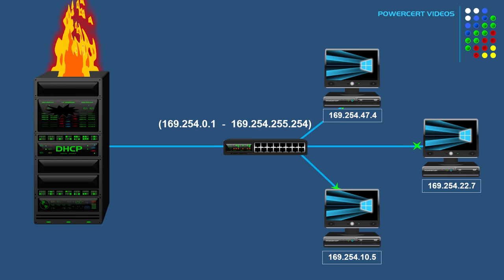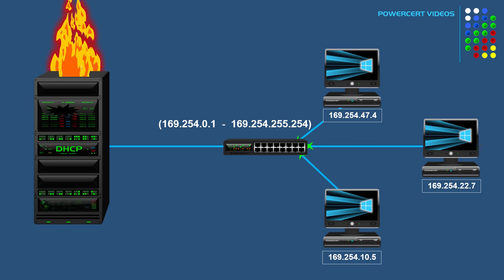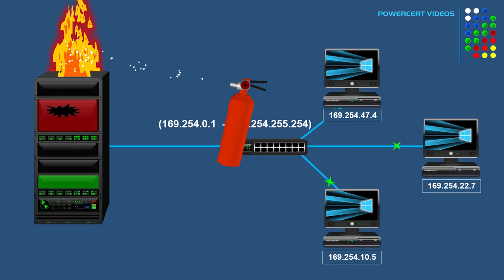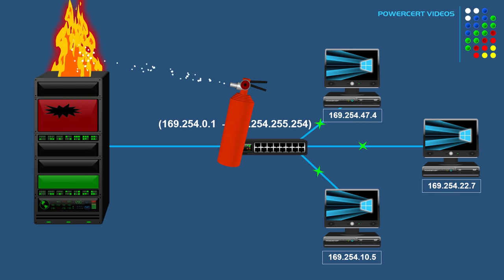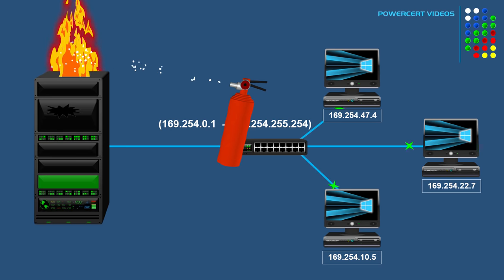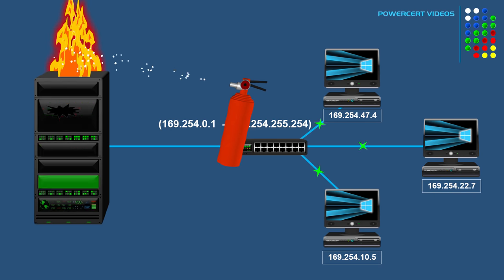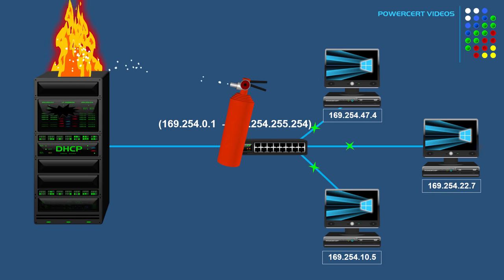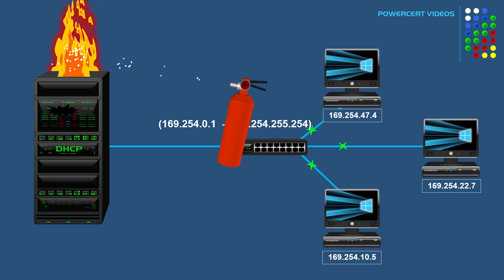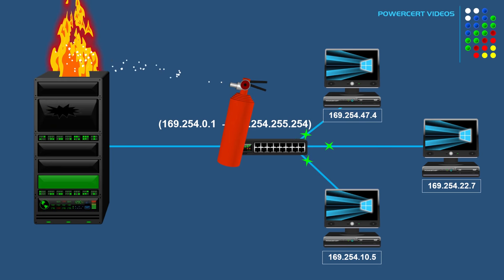Every few minutes the computers will check to see if they can contact a DHCP server — hopefully one that's not on fire. If a DHCP server is detected, the computer will replace the self-assigned IP address with the one obtained from the DHCP server.